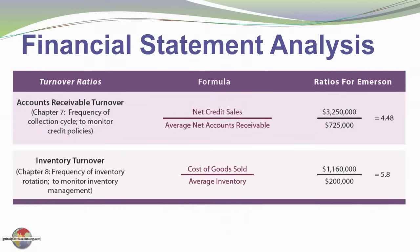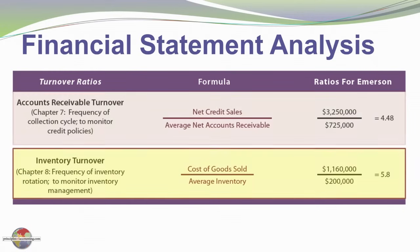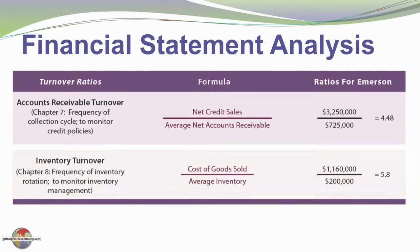Turnover ratios are another category. In Chapter 7, we introduced the accounts receivable turnover ratio, which measures the frequency of the collection cycle and is used to monitor credit policies. It is net credit sales divided by average net accounts receivable. From Chapter 8, we introduced the inventory turnover ratio, which is cost of goods sold divided by average inventory. If these ratios are changing, it can indicate building credit risk — a company not collecting receivables or not turning inventory consistently — so it's important to monitor them.